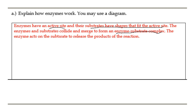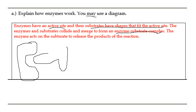They say you may use a diagram, so this means that it's optional — you don't have to, but I would advise that you do. One of the easiest diagrams you can use is to just consider that this is your enzyme and your substrate would be something that fits into that. What's also important is to make sure you label it — label this as enzyme and label that as substrate.